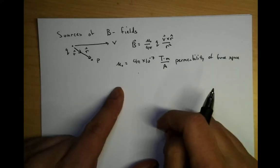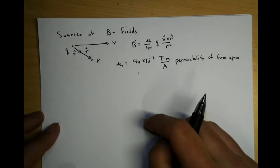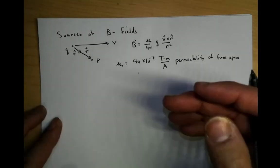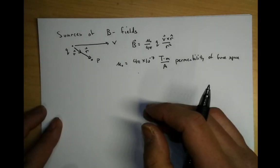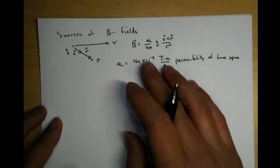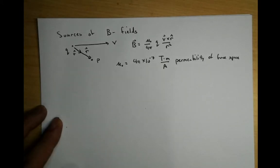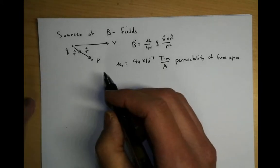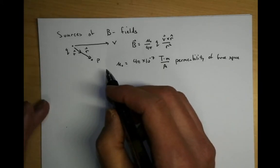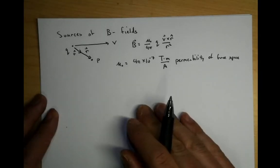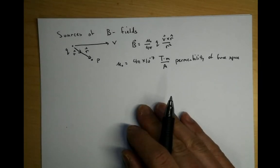As it turns out, kind of like the permittivity of free space in epsilon zero, this thing could vary in different materials. But unlike the permittivity, which is epsilon, this thing doesn't vary much. So by and large, if you have the permeability of free space, it's true for all materials as well.